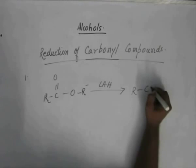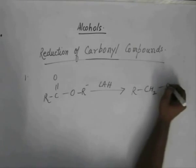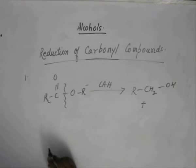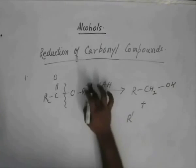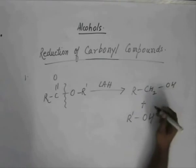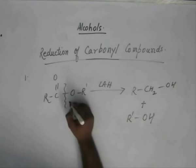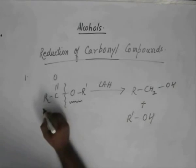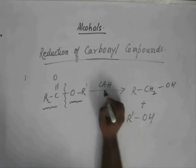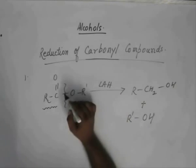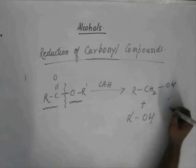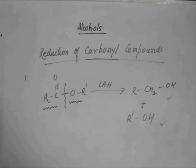You are left with RCH2OH plus this bond breaks away and we get two different alcohols, one from this side and another from this side. So lithium aluminum hydride breaks this C-O single bond over here and we are left with two different alcohols.